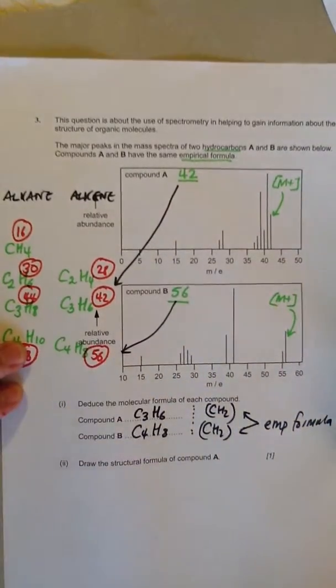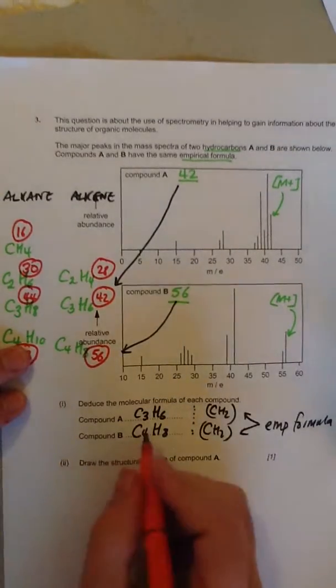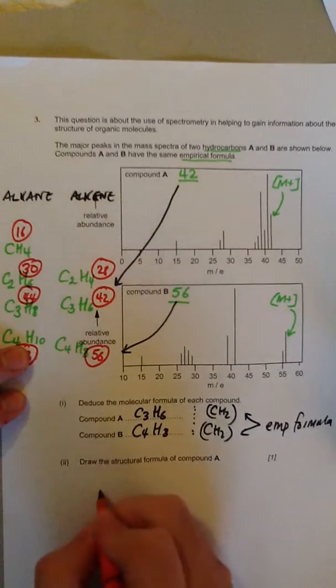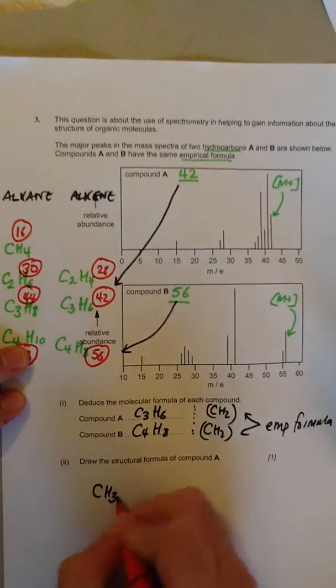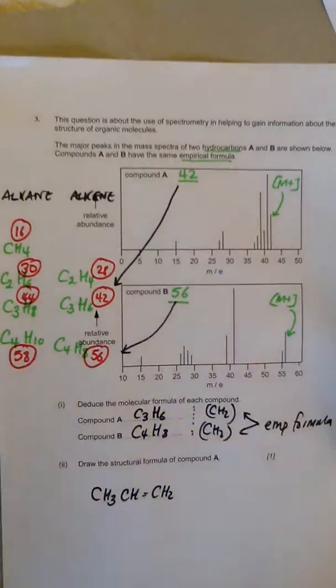It says, draw the structural formula of compound A. So the structural formula of compound A, we know it's propene, is CH3, CH double bond CH2.